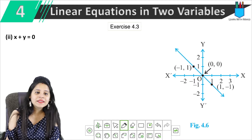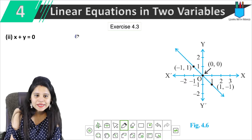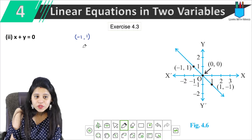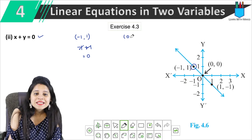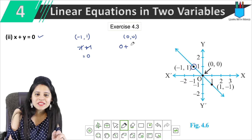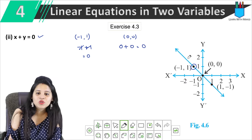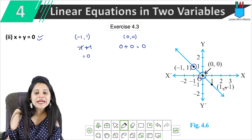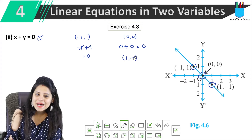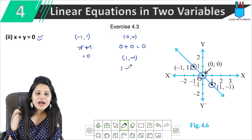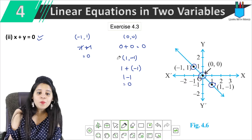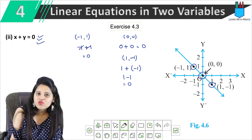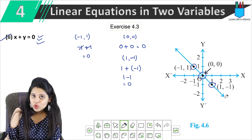The second equation is x plus y equals to 0. We take the first point (-1, 1): minus 1 plus 1 equals 0 — satisfied. The second point is (0, 0): 0 plus 0 equals 0 — satisfied. The third point is (1, -1): 1 plus minus 1 equals 0 — satisfied. Since all three points satisfy this equation, we can say this graph represents x plus y equals to 0.